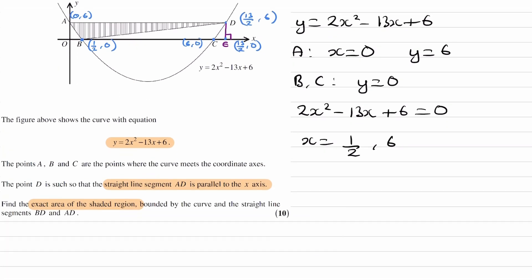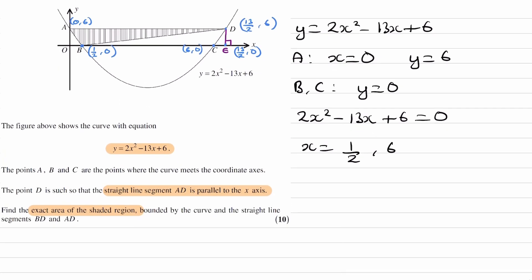So we have our coordinates. Now we can work out the area of that rectangle. So the rectangle is O, A, D, E. The base of that rectangle, from O to E, the length would be 13 over 2. And the height would be 6. That's the y-coordinate of A and D. Height is 6. So this will end up being 39. So that's the rectangle.